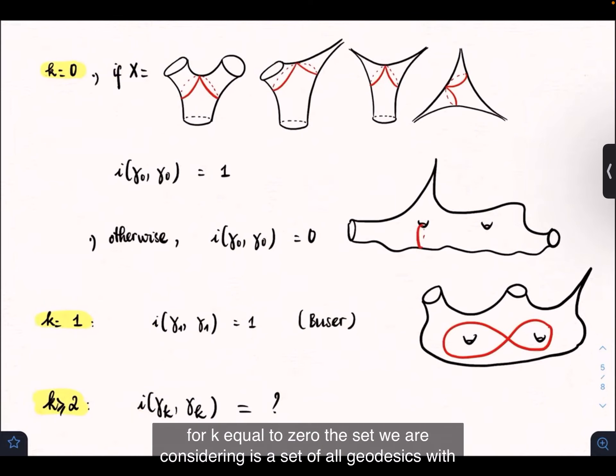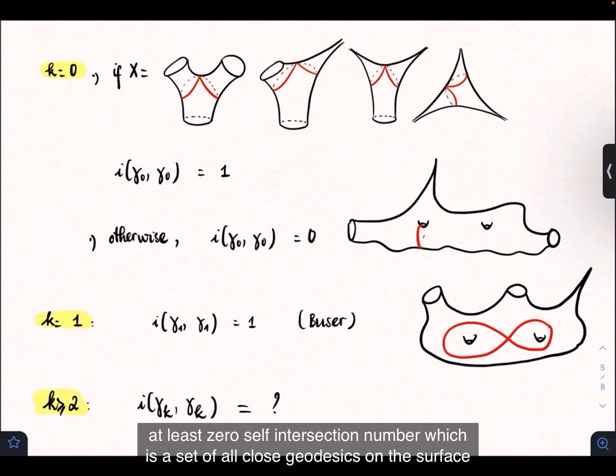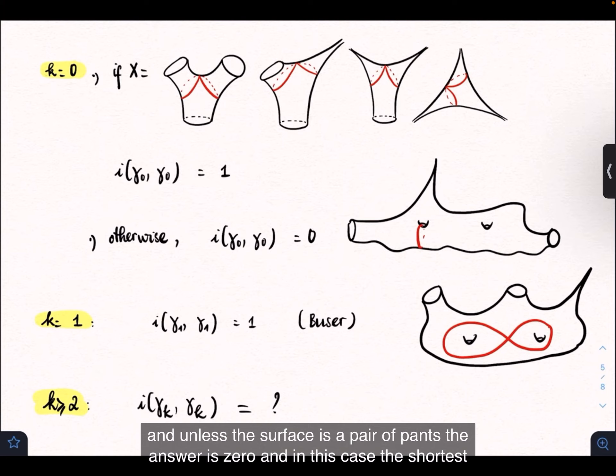For K equal to zero, the set we are considering is the set of all geodesics with at least zero self-intersection number, which is the set of all closed geodesics on the surface. Unless the surface is a pair of pants, the answer is zero.